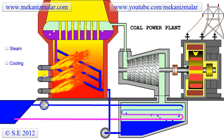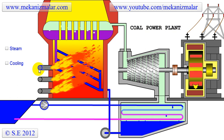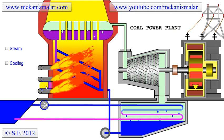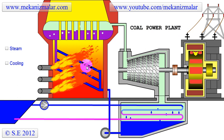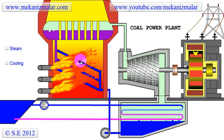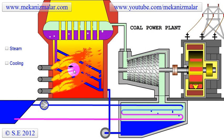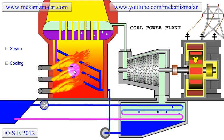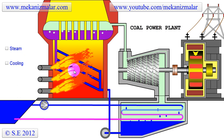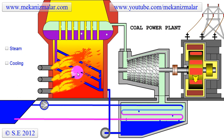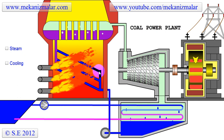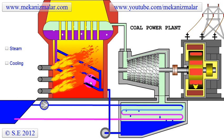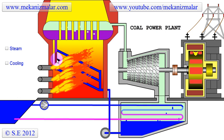To increase burning efficiency, a powdered coal and air mixture enters the furnace. During the burning process, the chemical energy stored in the coal is released as heat to create high temperatures inside the furnace. This heat passes to the water inside the coils located in the furnace.